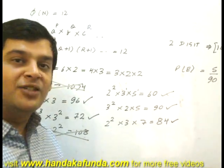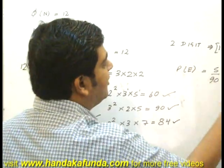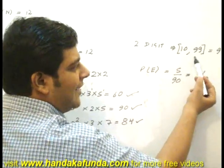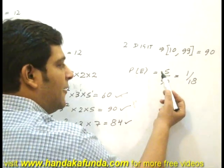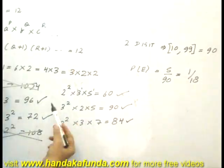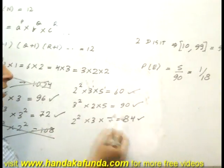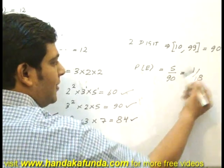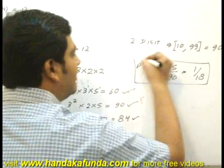But my question was on probability. I need to figure out the total 2 digit numbers which are from 10 to 99, that's 90. The probability is favorable cases by total cases. Favorable cases are 96, 72, 60, 90 and 84, that is 5 of them. 5 by 90 or 1 by 18 is my answer. Thank you.